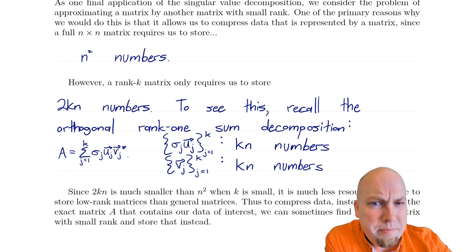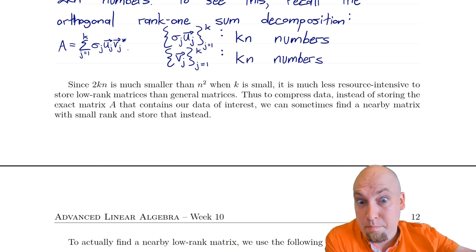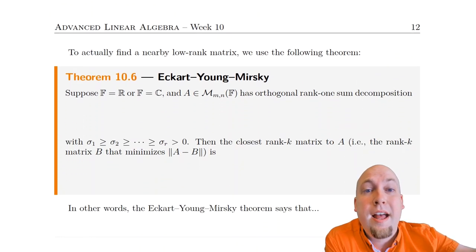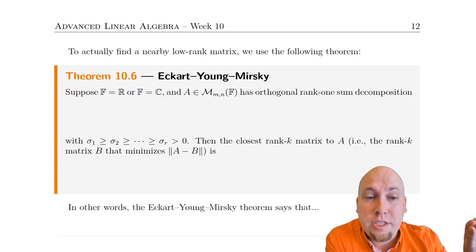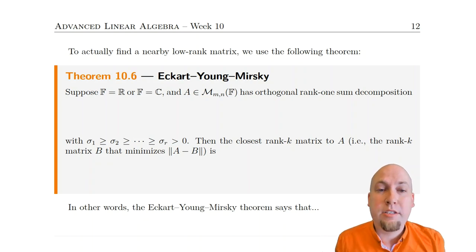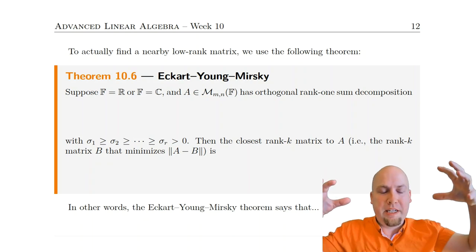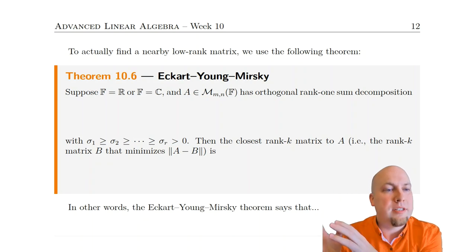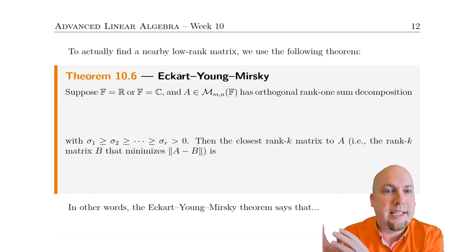Not every matrix is going to have small rank — most matrices don't; most have large rank. But fortunately there's a theorem that tells us how to find the nearest small-rank matrix to any matrix you start with. So the setup will be: we start with our big high-rank matrix, but here's a low-rank matrix that's really close to it — let's store that instead.